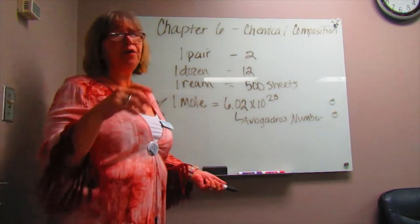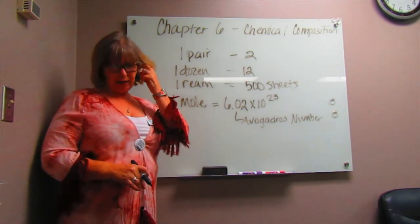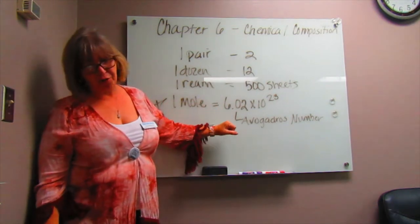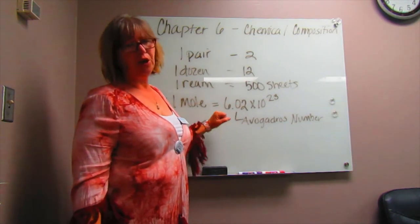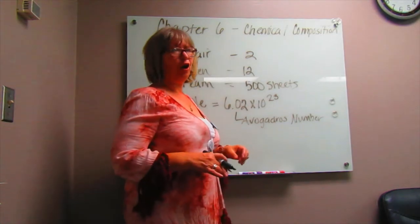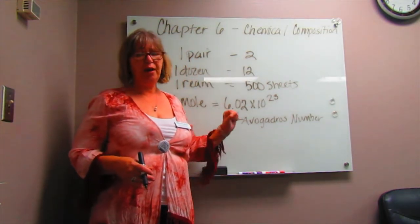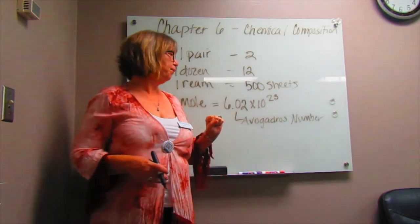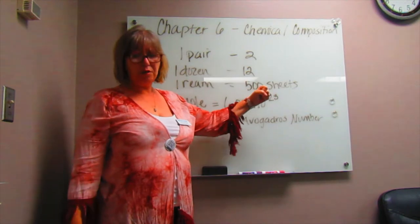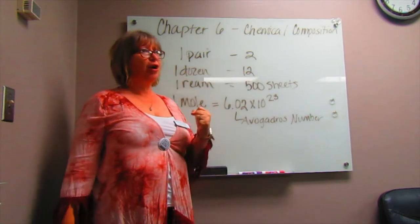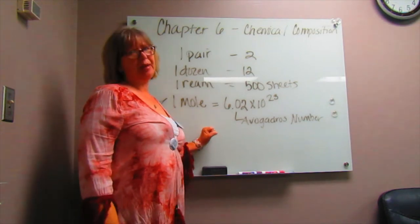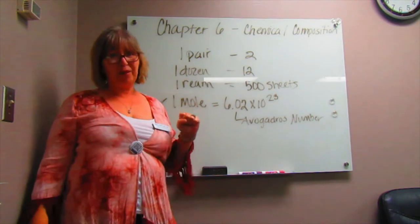To put Avogadro's number into perspective: 6.02 times 10 to the 23rd dollars would pay the earth's entire population three million dollars per second for 100 years. And if you had 6.02 times 10 to the 23rd marbles, they would cover the surface of the earth 50 miles deep. It's a very large number.